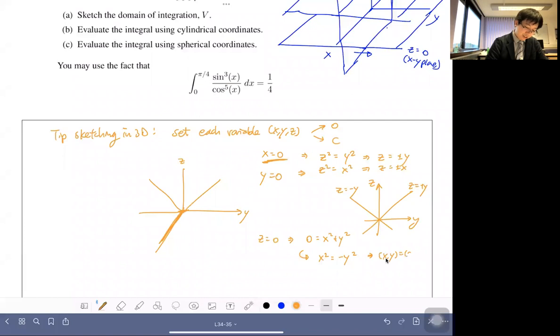Both of these equals zero. Okay, so that just means it's only that point. So that's not helpful. That's why I mean, that's why I said, try to set each variable to zero and see if it gets you some helpful diagrams. If it doesn't, set something to be constant, right?